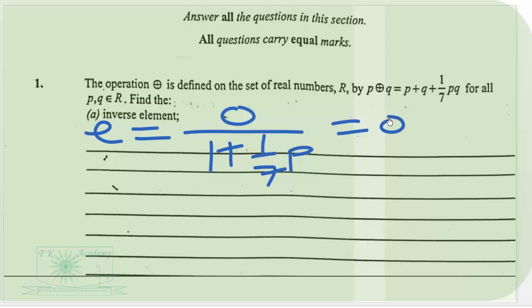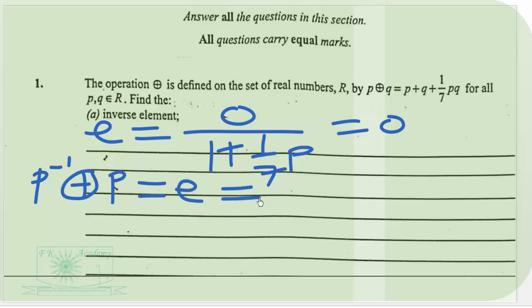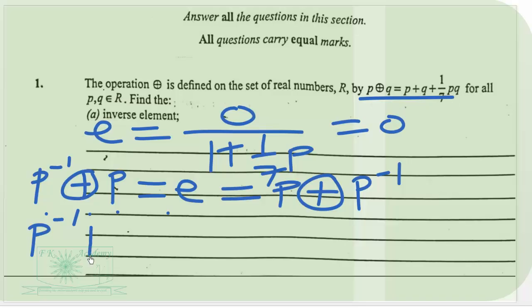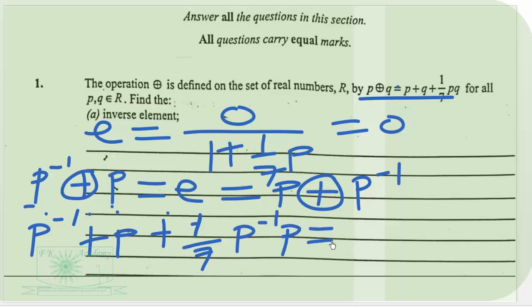Let the inverse of P be P⁻¹, also belonging to the set of real numbers. Then P⁻¹ ⊕ P = P ⊕ P⁻¹ = identity element. Using the definition, where P⁻¹ stands for P and Q stands for P, we get P⁻¹ + P + (1/7)(P⁻¹)(P) equal to the identity element, which is 0.